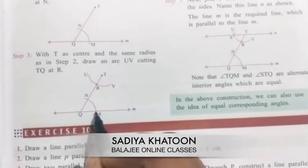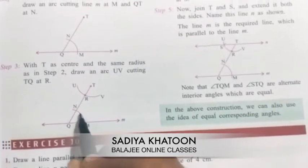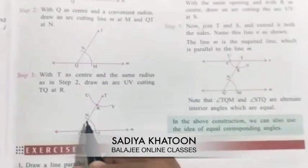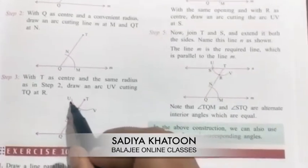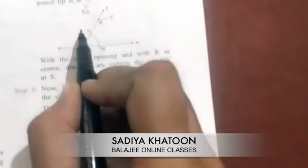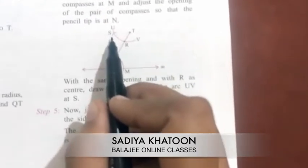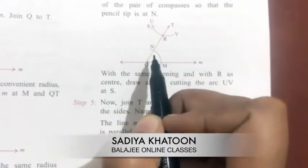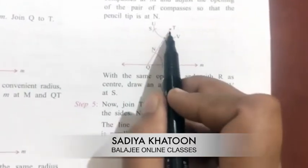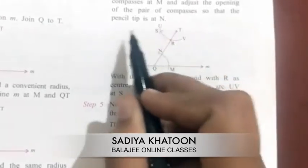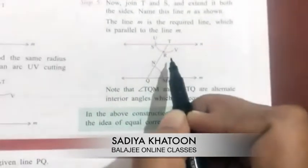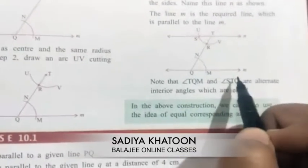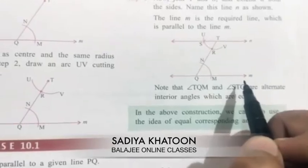Keep the compass needle on point M and extend it to reach point N, taking that radius. From R, draw an arc that cuts at point S. The point of intersection and point P are then joined together, and you will get a parallel line N that is parallel to line M.